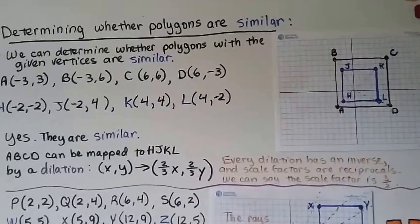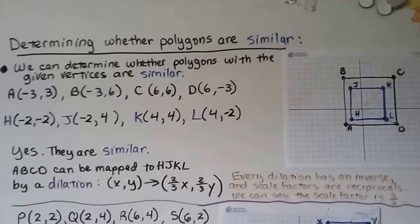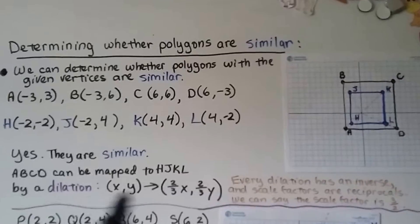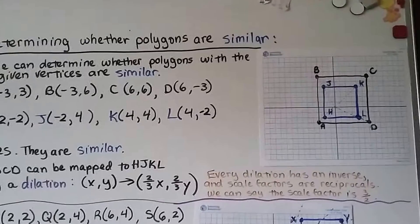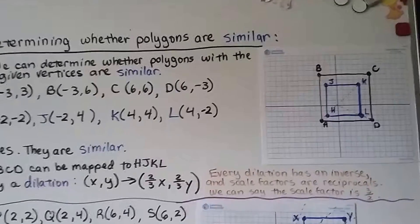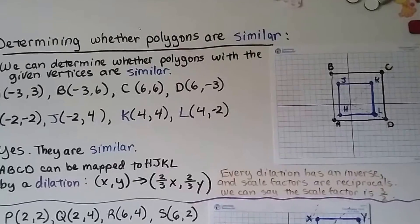So yes, they're similar. ABCD can be mapped to HJKL by a dilation where the scale factor is 2/3. And every dilation has an inverse, and scale factors are reciprocal, so we can even say the scale factor is 3/2.